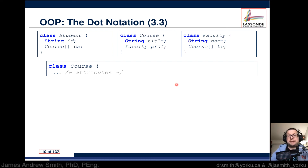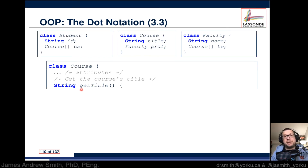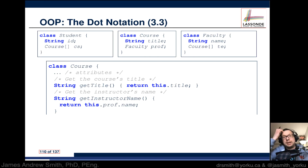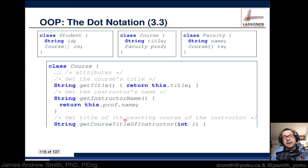Now let's look at the Course class. We have a method getTitle because we've been talking about that — we return this course's title attribute. We can also get the instructor's name. The name is not defined in Course — it's defined in the Faculty class. The object in this case will be prof, so we return this.prof.name, where prof is of type Faculty.